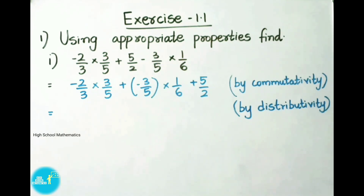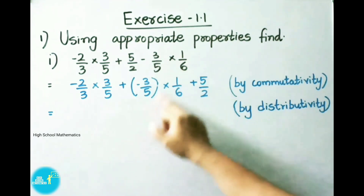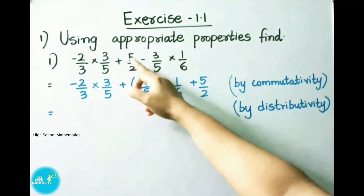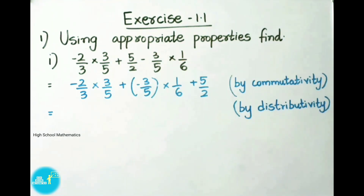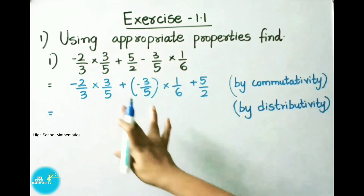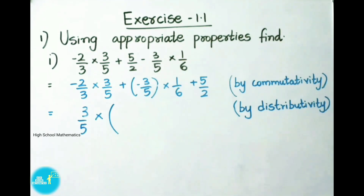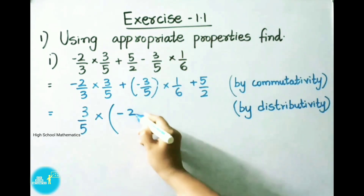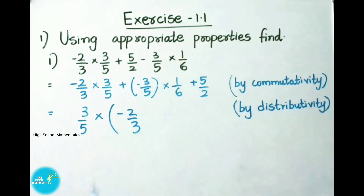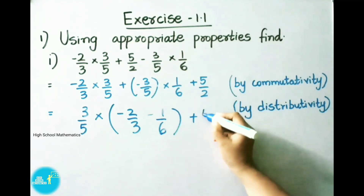So we can write this as b plus a. Next step: minus 2 by 3 into 3 by 5, plus of minus 3 by 5 into 1 by 6 as b value, plus a value, which means 5 by 2. Now in the next step, we shall apply distributive property. We know distributive property is a into b plus a into c, can be written as a into b plus c. So here we are going to take 3 by 5 as common. So a into b plus c, where b value means minus 2 by 3. We have taken only 3 by 5 as common, so this minus will be applied for 1 by 6. Write on minus 1 by 6 plus 5 by 2.